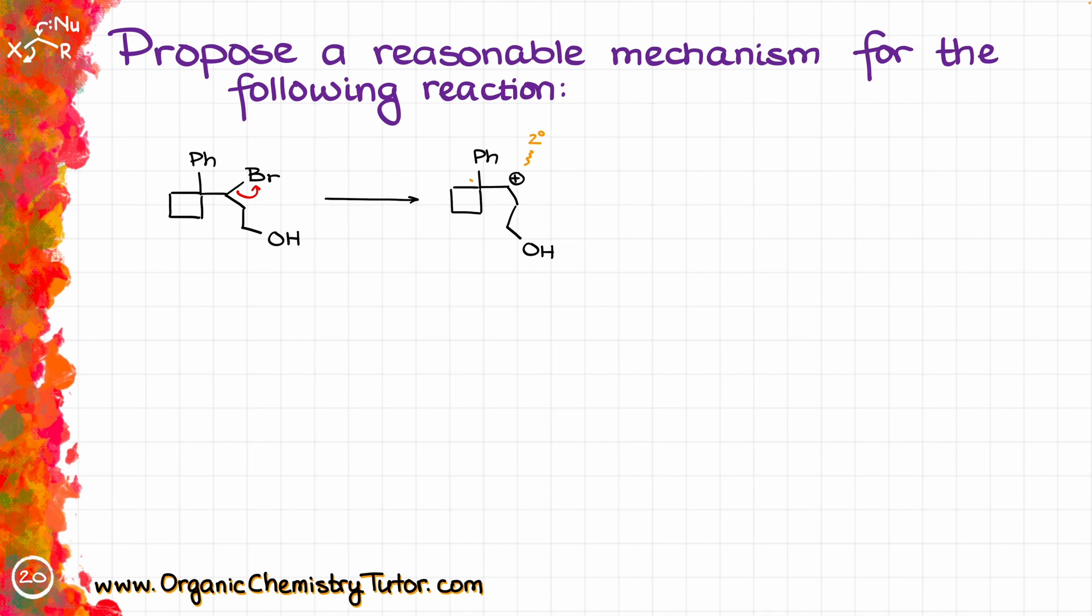Since it's a secondary carbocation, it can easily rearrange to give us something more stable. Right next to it we've got a quaternary position, and on the other side we have another secondary position. We don't care about the other secondary position because rearranging onto that carbon won't increase carbocation stability.